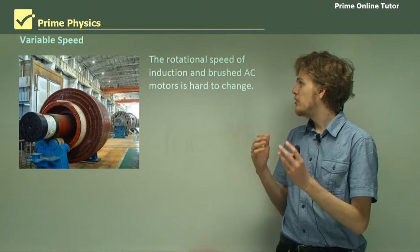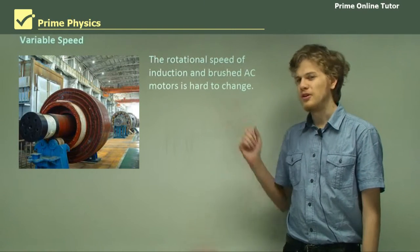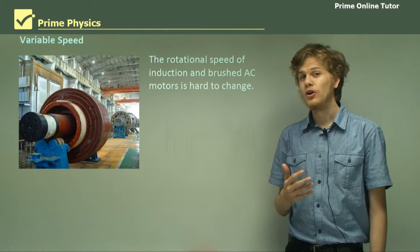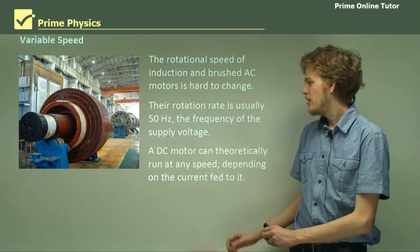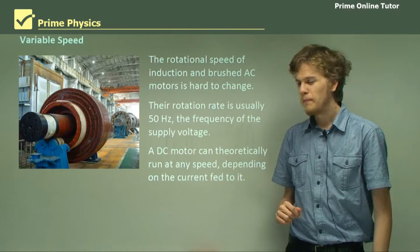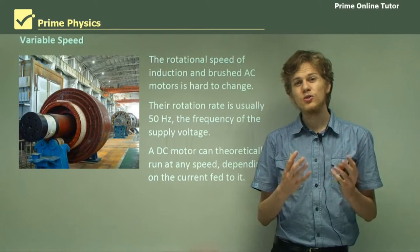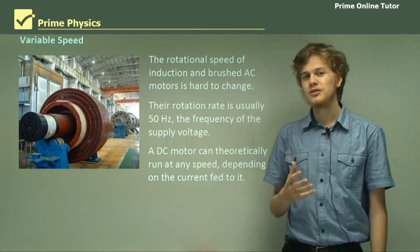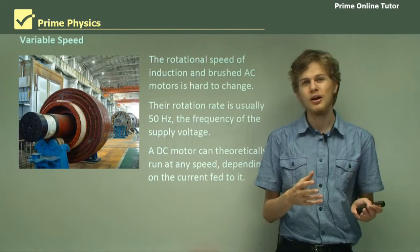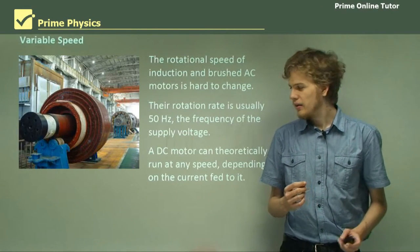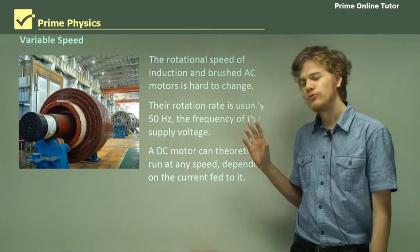Now the rotational speed of induction AC motors is hard to change. Which means that in terms of which motor is best for variable speed, these ones aren't great. In fact the best way to get a motor with a variable speed is not these at all because they will always rotate at exactly 50 Hertz. Instead we want a DC motor. If we have a DC motor then we can theoretically run them at any speed. The rate at which a DC motor spins is not dependent on the input frequency in the same way that induction motors and standard AC motors are dependent on the input frequency. For a DC motor we have a constant supply. We don't have a supply that varies with time. So we can pretty much pick any speed we want. So in terms of variable speed the best sort of motor is the DC motor.